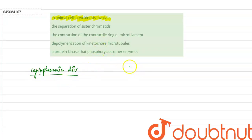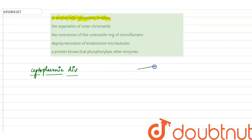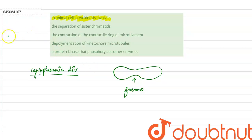Now what happens in our animal cells — suppose it is animal cells — what happens in the sister chromatids in the telophase? The sister chromatids start to separate and there is a formation of furrow. Here there is a formation of furrow in the cytokinesis and it begins.